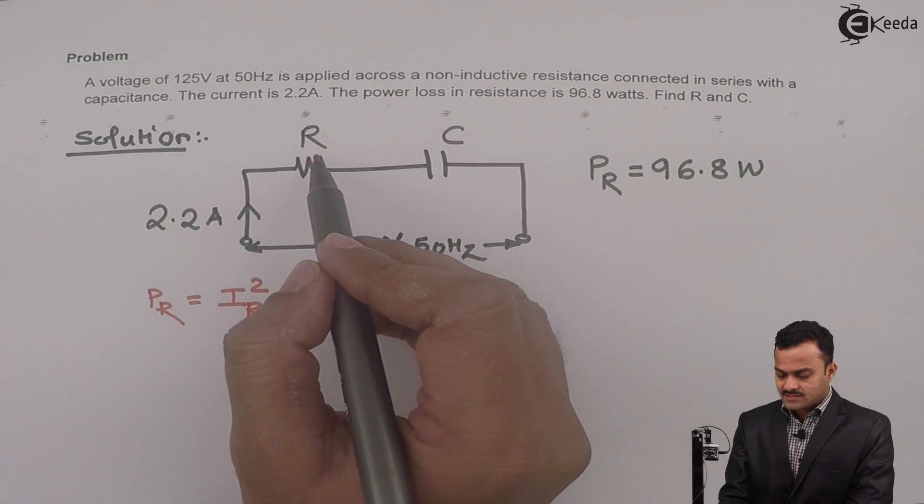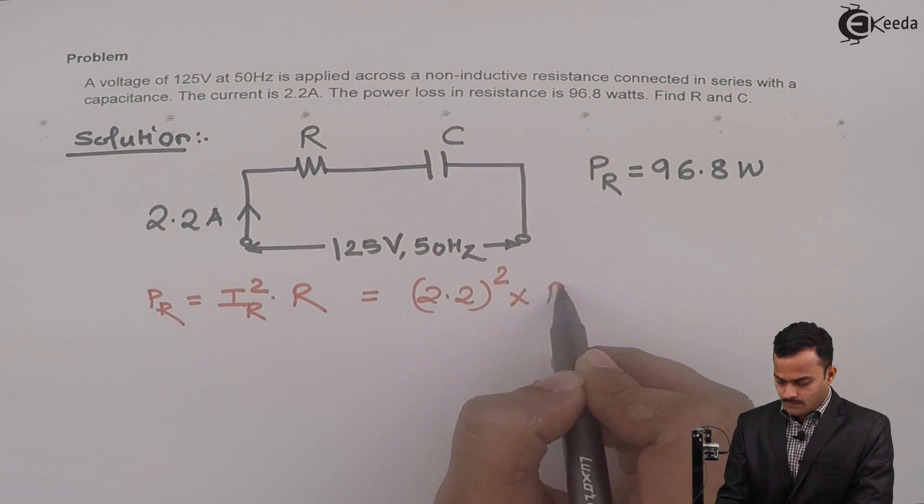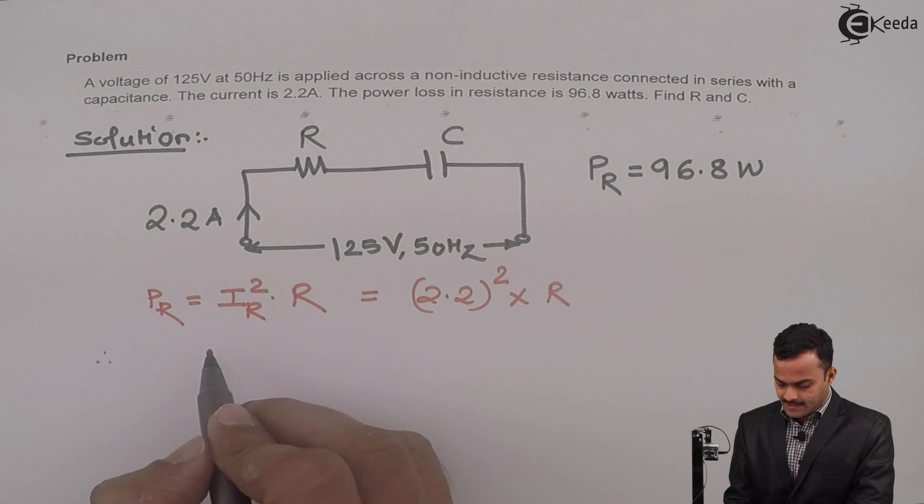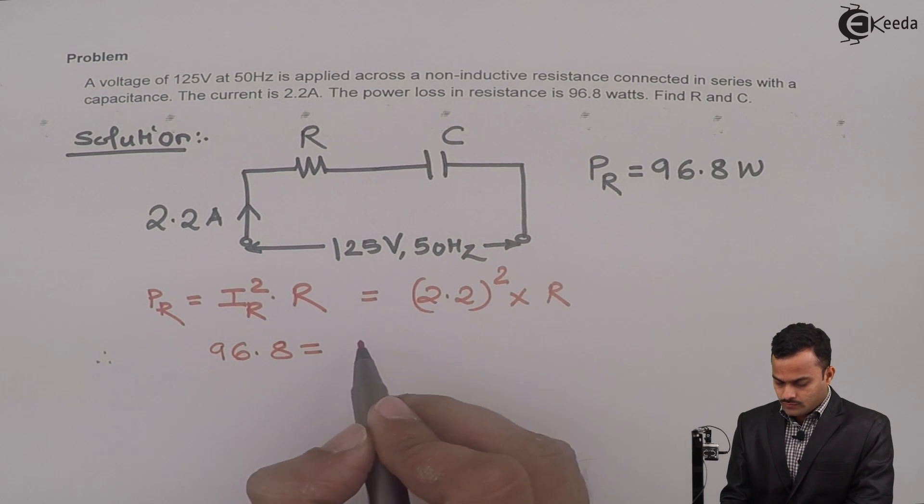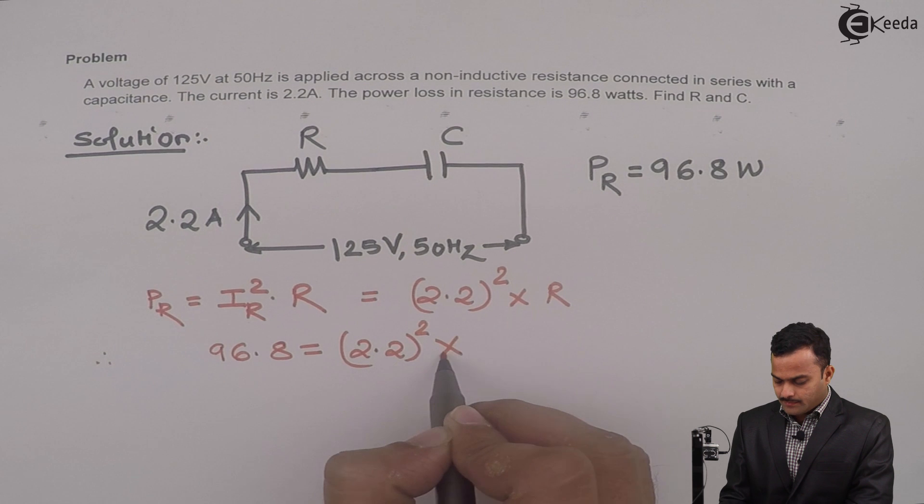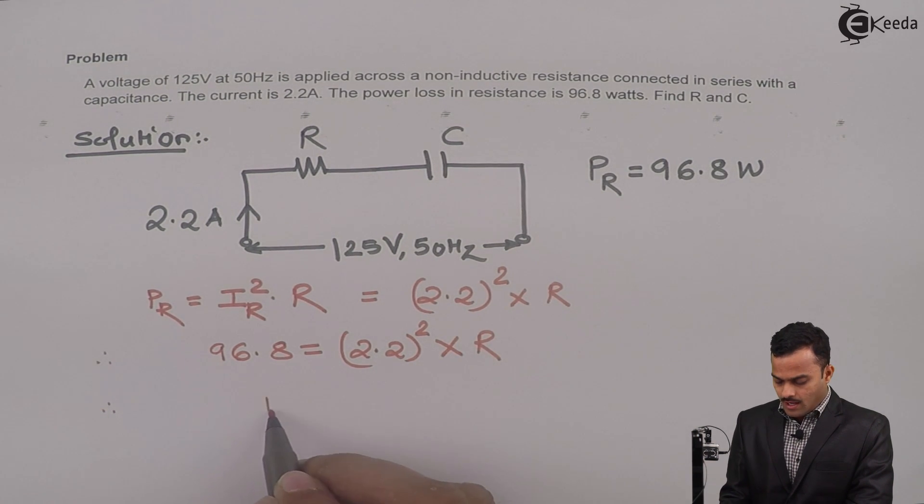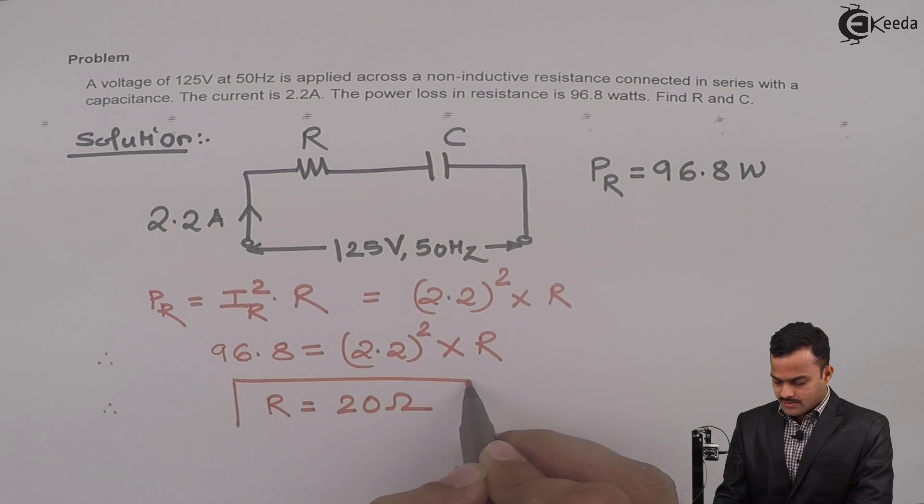PR is given as 96.8, hence I can say 96.8 equal to 2.2 square multiplied by R. If we solve, you will get R equal to 20 ohm, a straightforward answer.